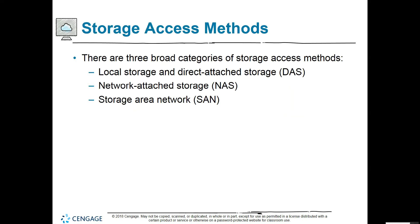There are three broad categories of disk storage access methods: local storage and direct attached storage — things with fixed connections to the system unit; network attached storage or NAS — a remote storage option; and a storage area network or SAN — multiple locations across the network for storage.